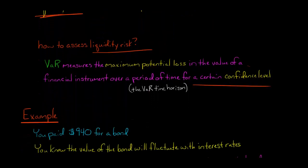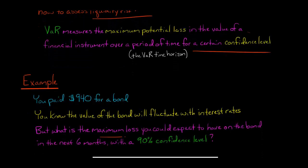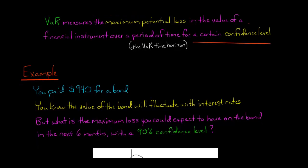Let's say a bank paid $940 for a bond. You know that the value of that bond is going to go up or down based on changes in interest rates. That's affected by whether the bond is fixed rate or floating rate, long term or short term. All those factors and characteristics affect the extent to which it's sensitive to changes in interest rates. But what if we want to know the maximum loss that the bank could expect on that bond in the next six months with a 90% confidence level?